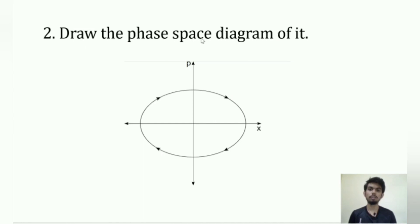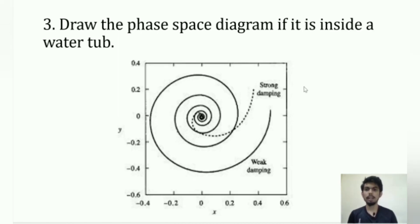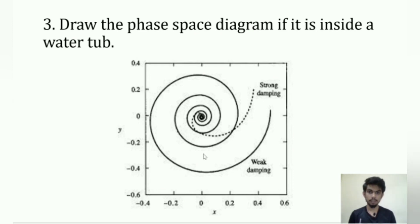Next they asked me to draw the phase space diagram of a simple pendulum. Since it is a simple harmonic oscillator, the phase space is an ellipse, where p represents momentum and x represents position in 1D. Then they asked me to draw the phase space diagram if the simple pendulum were placed in a water tub. Viscous forces come into play, so it executes damped harmonic oscillation, and the phase space diagram becomes a spiral.